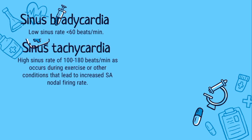Next is the sinus tachycardia. It is when your body sends out electrical signals to make the heartbeat faster. It usually occurs during exercise, anxiety, or by using certain drugs. When it happens for no reason, it is called an inappropriate sinus tachycardia. In sinus tachycardia, it has a high sinus rate of 100 to 180 beats per minute.